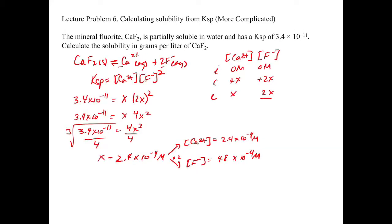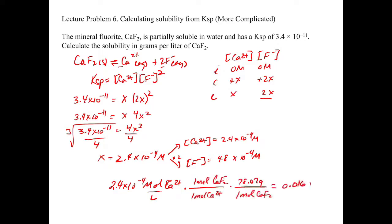If the problem asked for concentrations, you could stop there. But it's asking for the solubility in grams per liter of calcium fluoride, so we do our conversion. We take 2.4 times 10 to the minus 4 moles per liter of calcium 2+. For every 1 mole of calcium 2+ there is 1 mole of calcium fluoride, and for every 1 mole of calcium fluoride there are 78.07 grams. This gives 0.016 grams per liter of calcium fluoride — that's our solubility in this more complicated case.